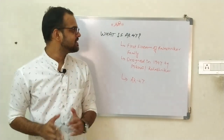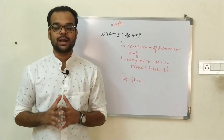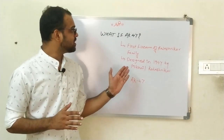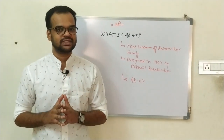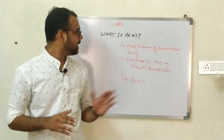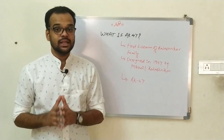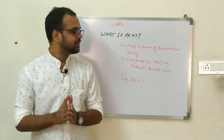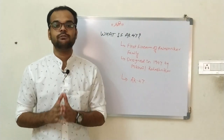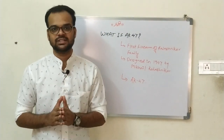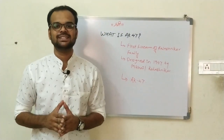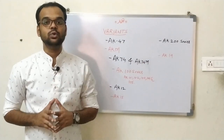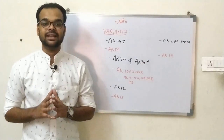The AK-47 is the first firearm of the Kalashnikov family, which was designed in 1947 by Mikhail Kalashnikov. That's why it is named after the designer — Automat Kalashnikov 1947, or AK-47. Now let's talk about the AK family and its variants.